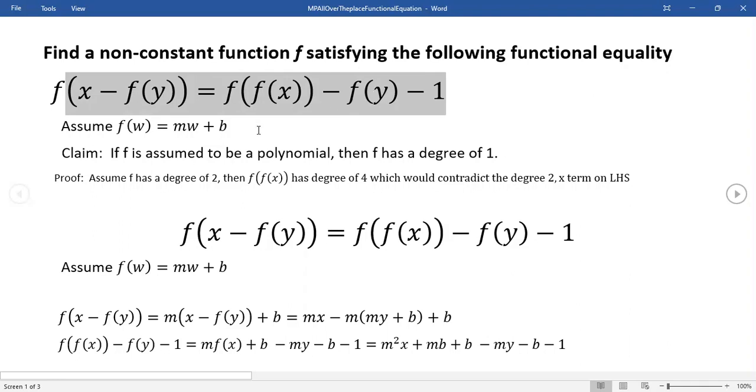So I'm going to assume that if f is a polynomial, it has to be degree one, or it has to be in this form linear.